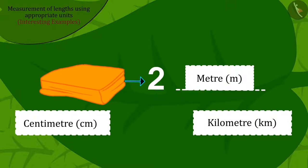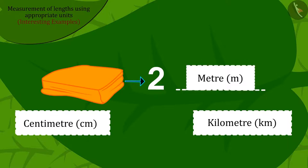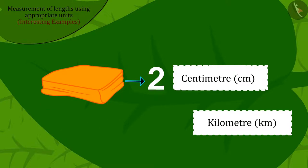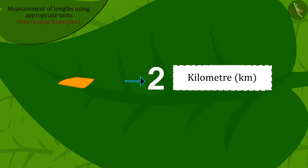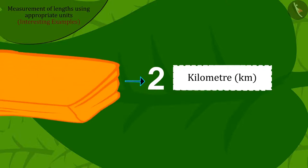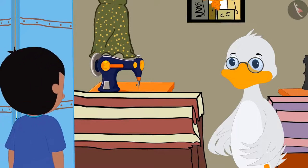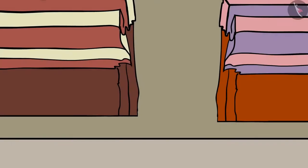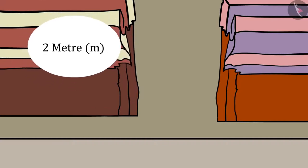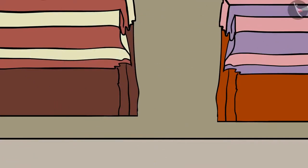Raju should use meter for the piece of cloth for his father's shirt, because the 2 centimeter measure would be too short and 2 kilometers would be too long. Raju immediately reached the uncle's shop and bought a 2 meter long cloth for his father.